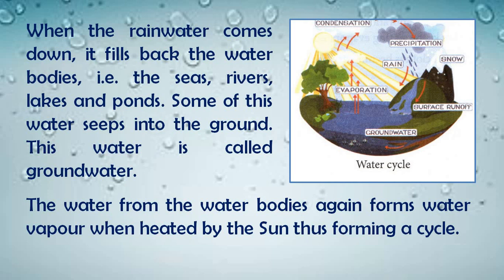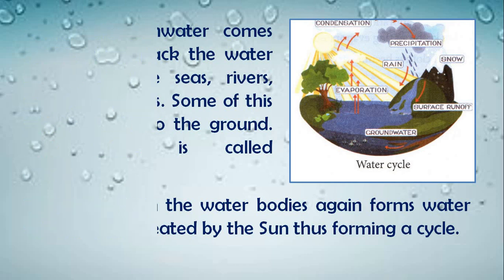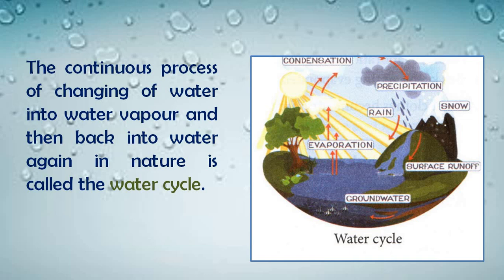Ab dekhiye — zameen ka water vapor banke oopar gaya, phir wo cool hokar cloud bana, aur cool hokar wapas zameen pe aaya. Jab wapas aa gaya, toh sun ki heat phir se us water ko milti rehti hai — again evaporation ki process hogi, again water vapor form hogi, aur wo phir condense hokar cloud banaegi, aur after that again rain hogi. It means water ka ye cycle hamare nature mein continue chalta hi rehta hai — that is known as the water cycle. The continuous process of changing of water into water vapor and then back into water again in nature is called the water cycle.